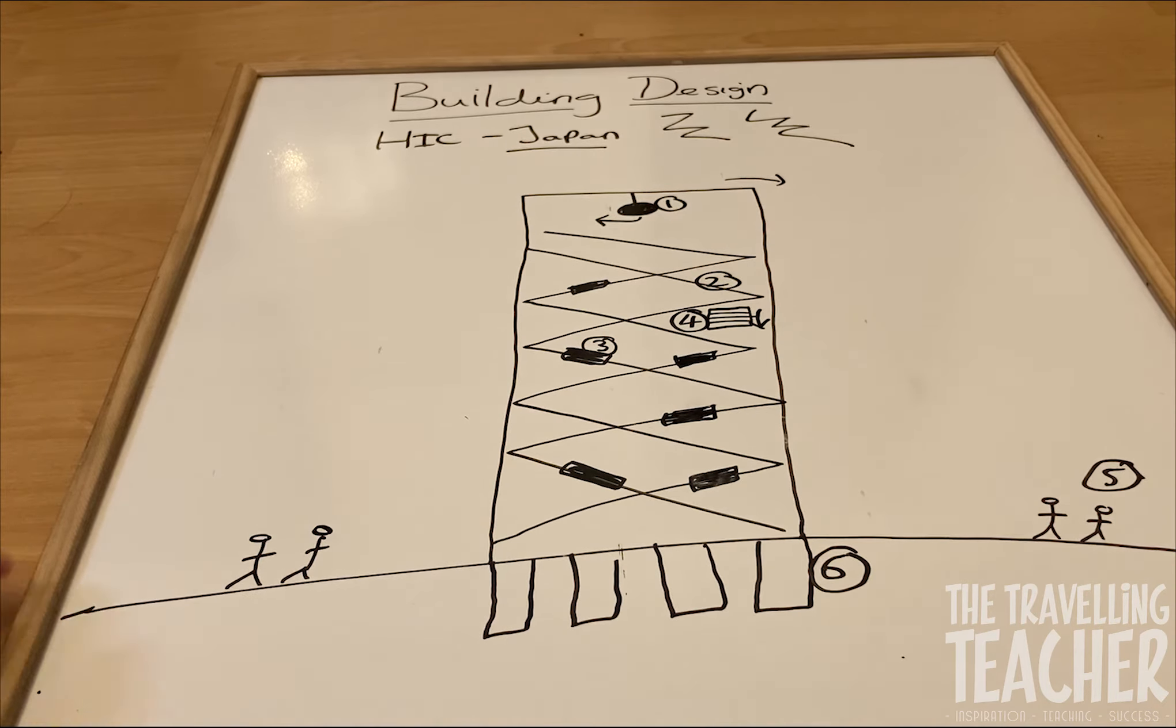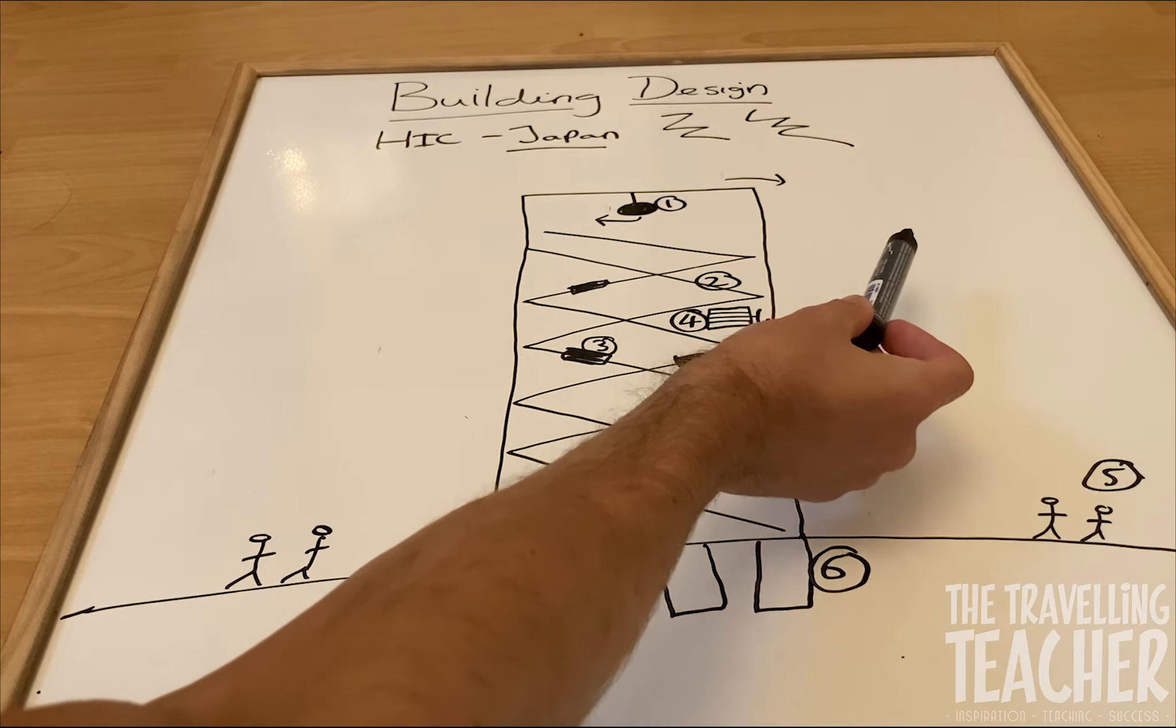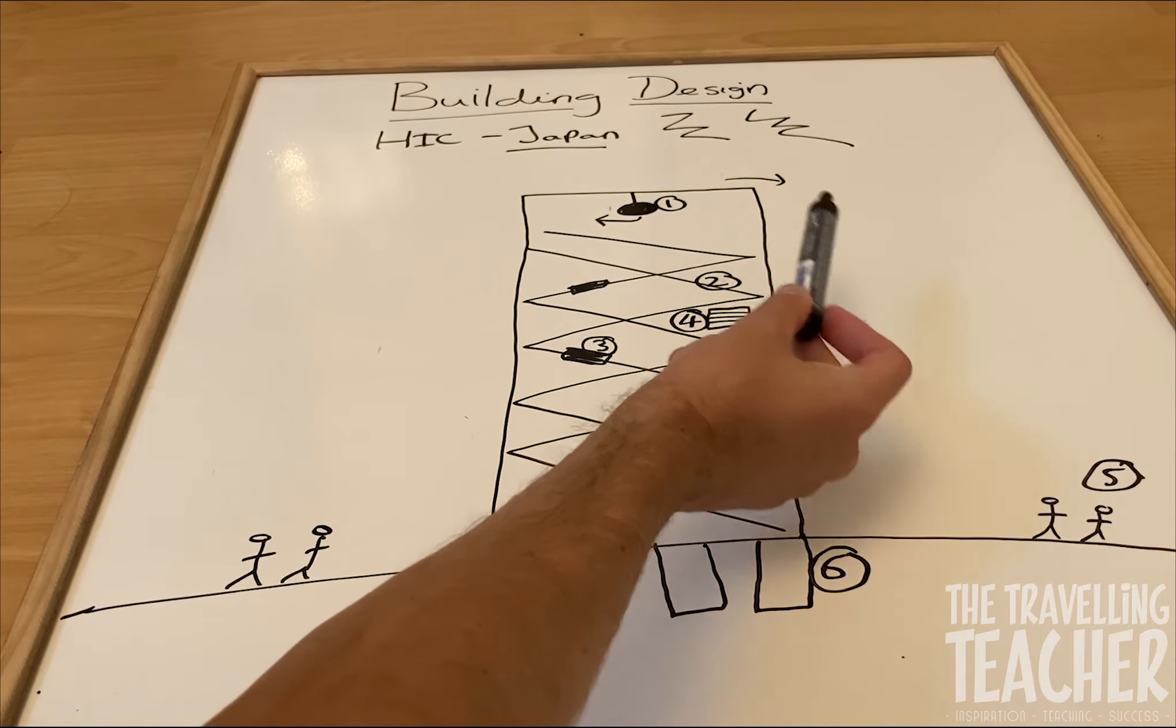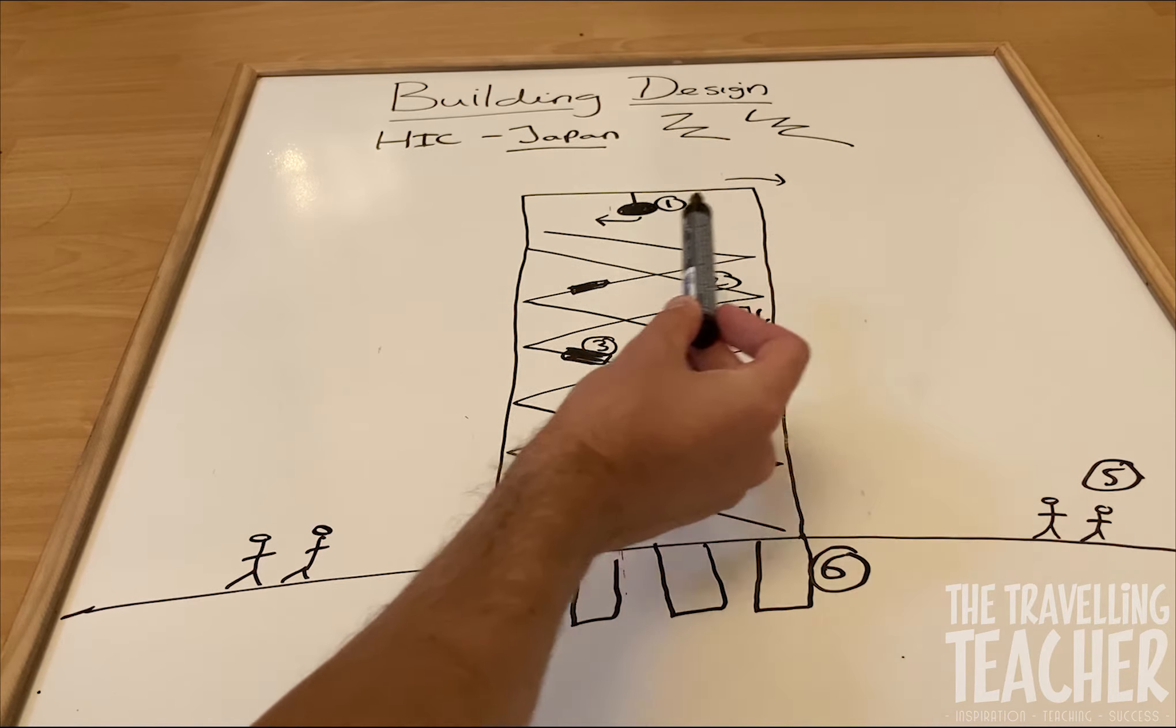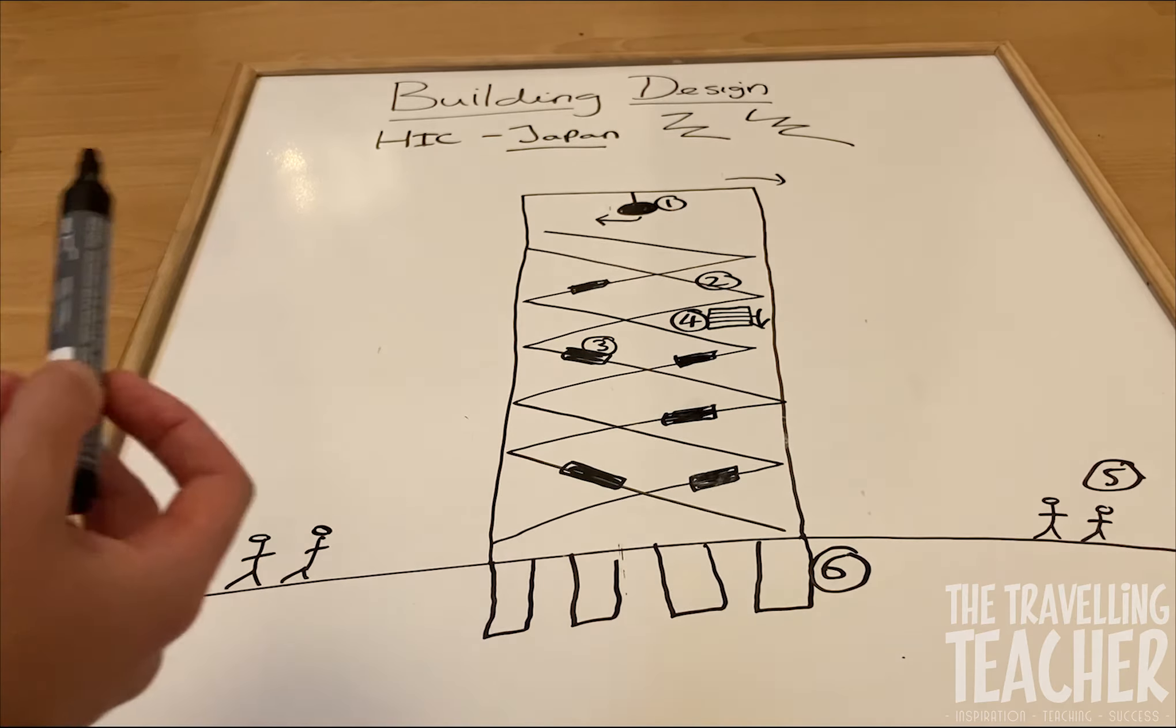So number one, in the top of our buildings we have a pendulum or we can have rolling weights. And the way that works is if the building sways one direction, the weight, the counterweight will counterbalance it so the building will remain standing.